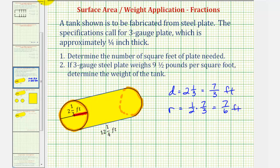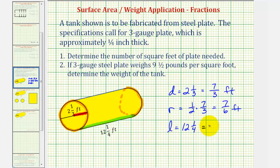And then finally, notice how the length of the tank is twelve and one-fourth feet. So let's use L for length, which is twelve and one-fourth feet. We also want to write this as an improper fraction. The denominator stays four. We have four times twelve is forty-eight, plus one, giving us forty-nine-fourths feet.